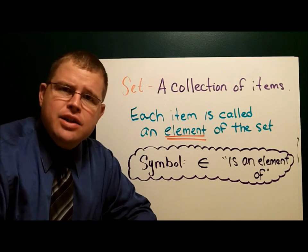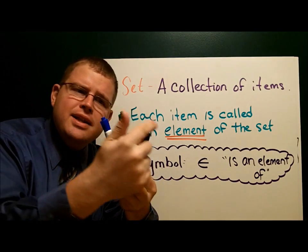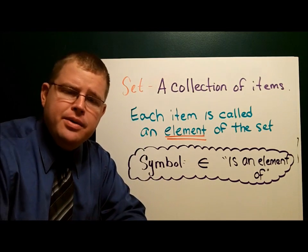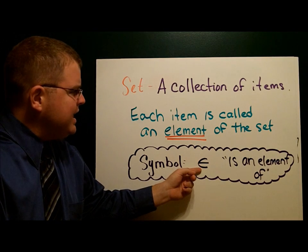Each item in the set is called an element. So here I have three markers. This set contains three elements. The notation that we use is this little ∈, and that simply means 'is an element of.'